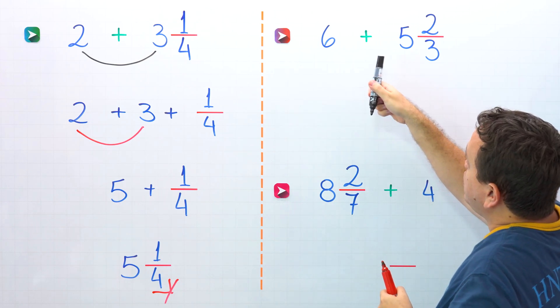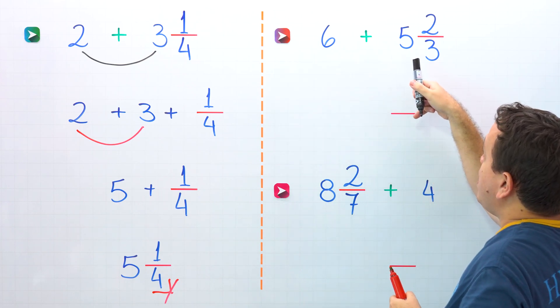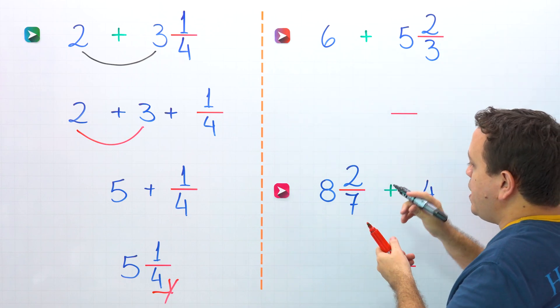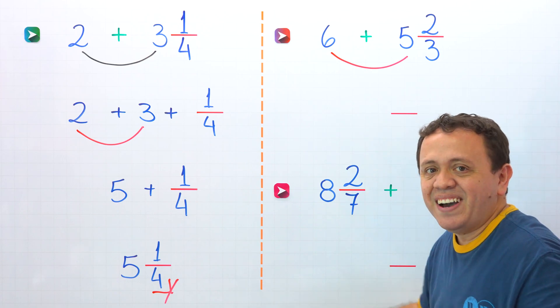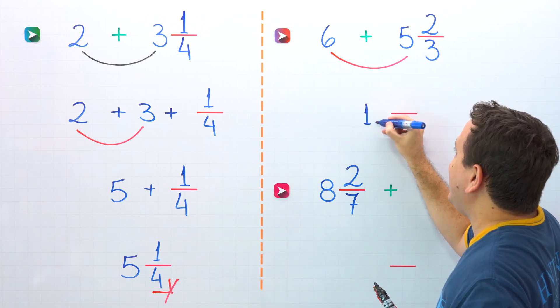In the second example, we need to find the sum of 6 and 5 and 2 thirds. In the quick method, we'll start by adding the whole numbers, and 6 plus 5 give us 11. That is correct.